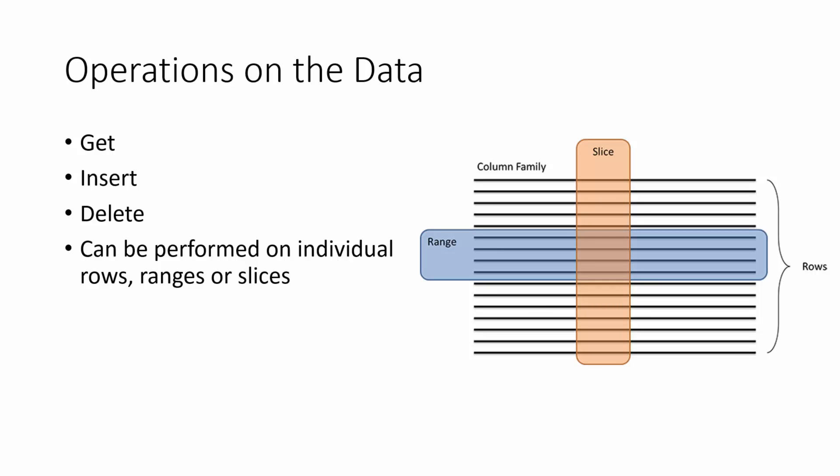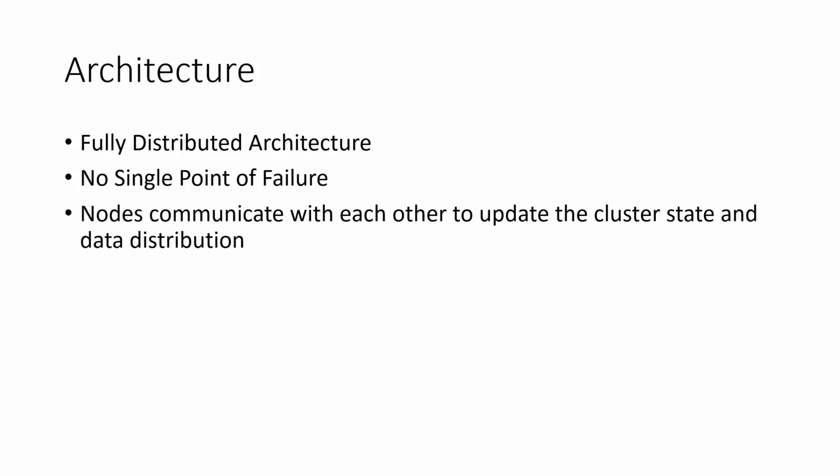Cassandra has a very interesting architecture which is unlike what we've seen with many other NoSQL products. Cassandra is a fully distributed architecture where nodes are organized in a peer-to-peer fashion. There's no single point of failure in a Cassandra cluster. The nodes communicate with each other to update the cluster state and to keep note of the distribution of data. The actual data is distributed throughout the cluster using a process called consistent hashing.